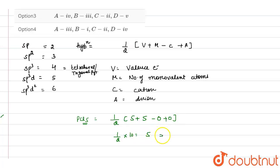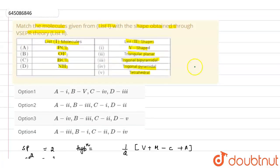So if it is 5, that means it is sp3d hybridized.